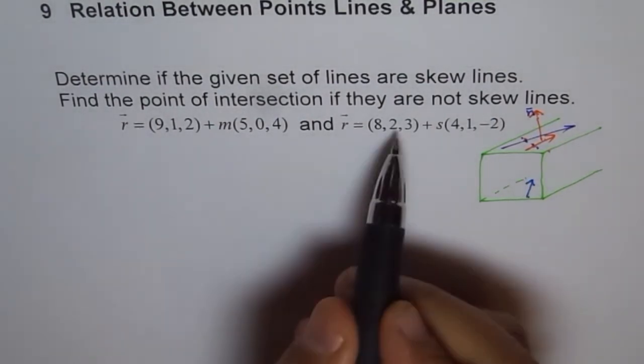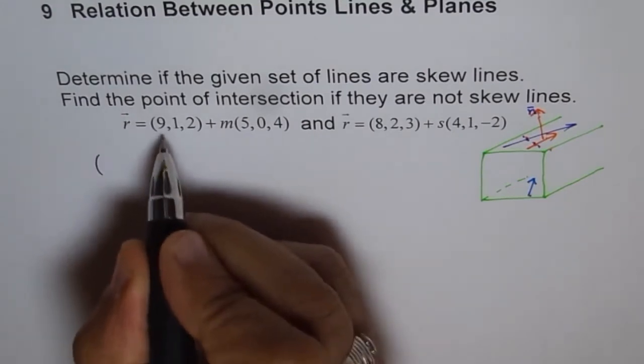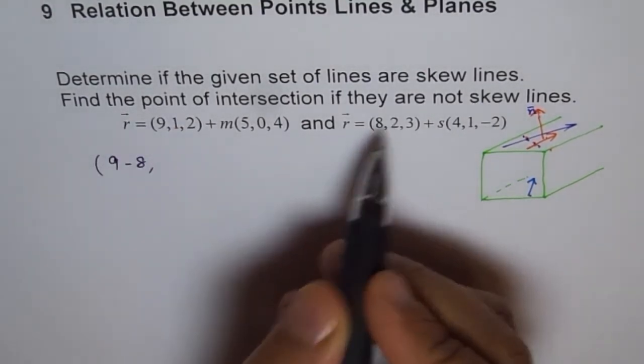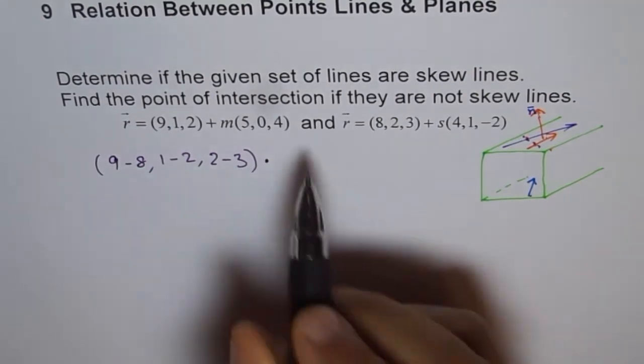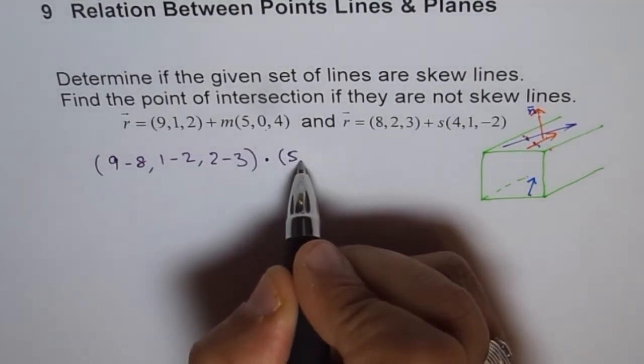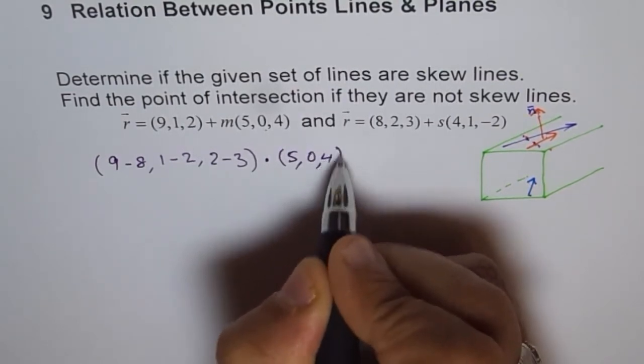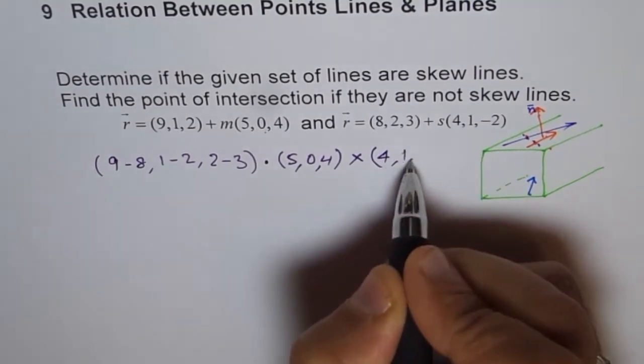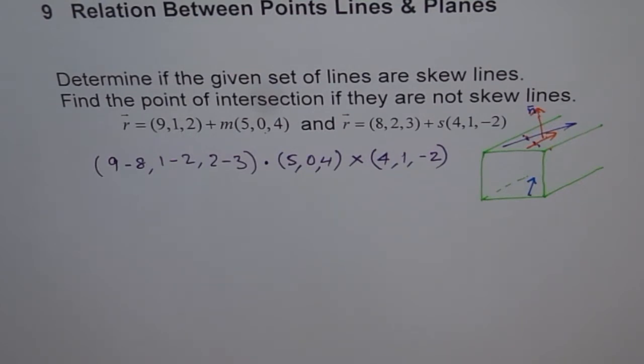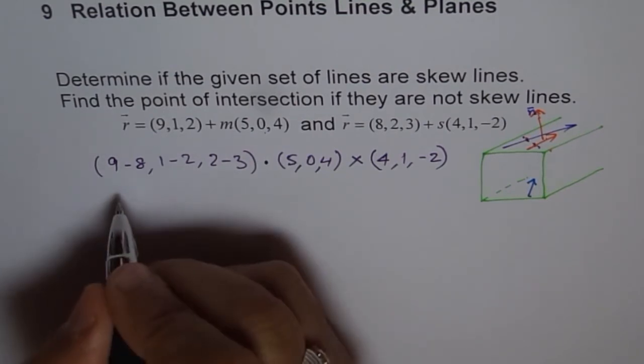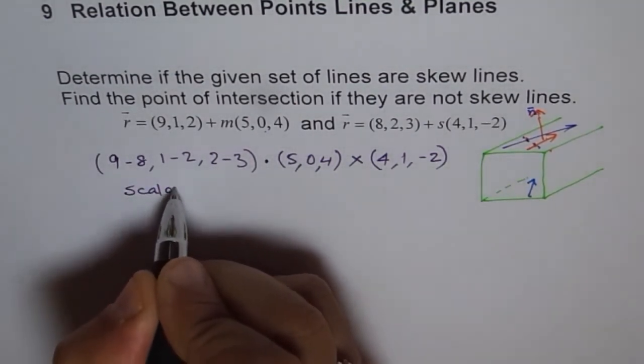So, what is the scalar triple product which we are trying to do? So, one we will get from joining these two points. So, the direction will be like this: (9-8, 1-2, 2-3) dot cross product of these two directions. That is, (5,0,4) cross (4,1,-2). So, if I get this as 0, that means they are not skew. They are coplanar in fact. But if it is not 0, then skew lines. That is how we test for skew lines. And this is called scalar triple product.